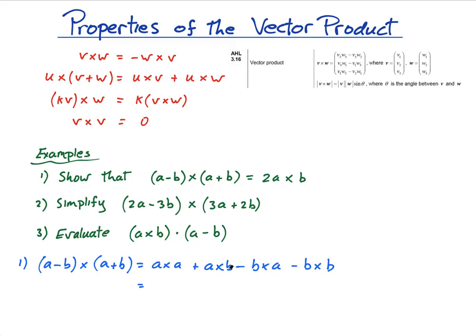And I have a cross b, a cross b minus b cross a. Now this is actually equal to, from this, minus b cross a is equal to a cross b.